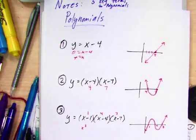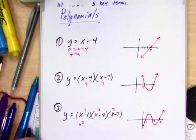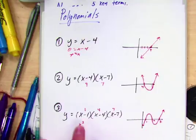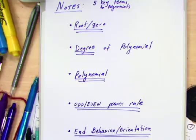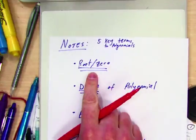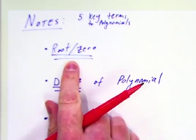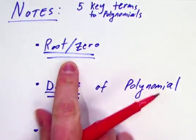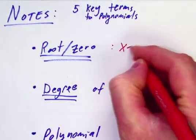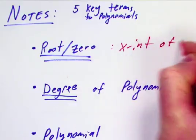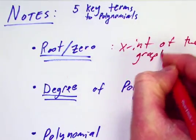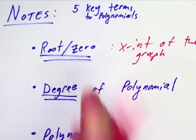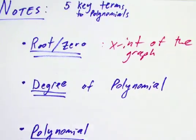We need to start thinking about how we were able to graph these so quickly based on just knowing the x-intercepts. A root or a zero is the x-intercept of the graph. So the x-intercept of the graph is also known as the root or the zero.